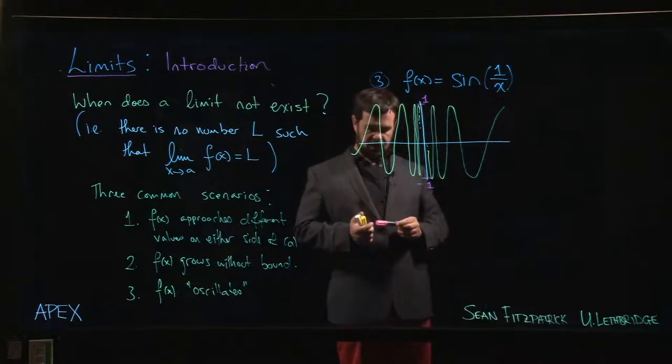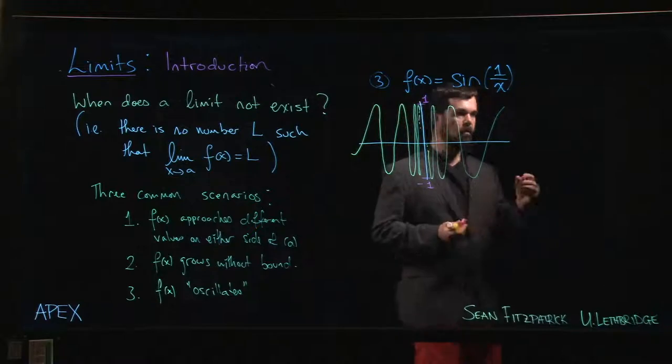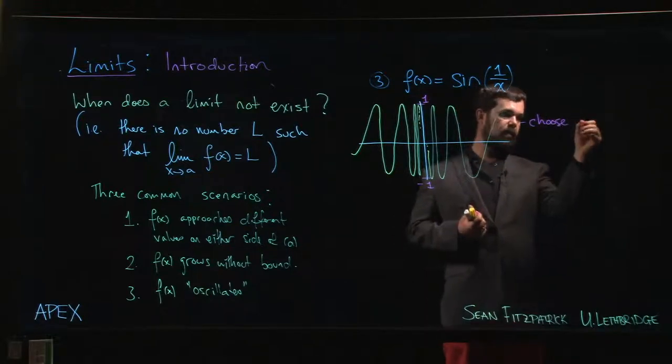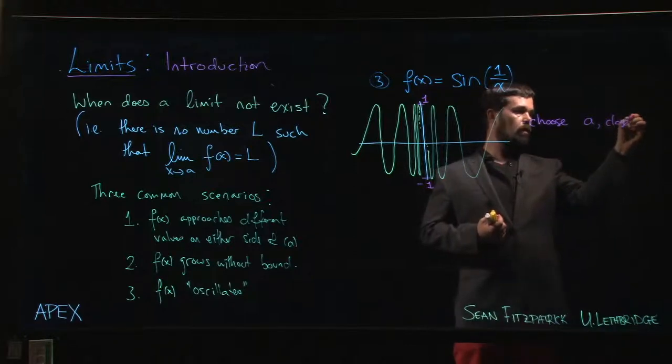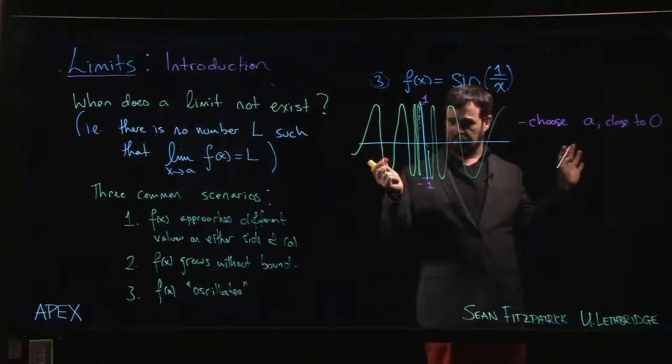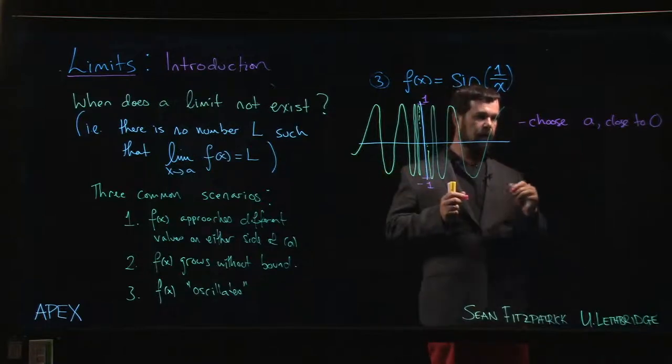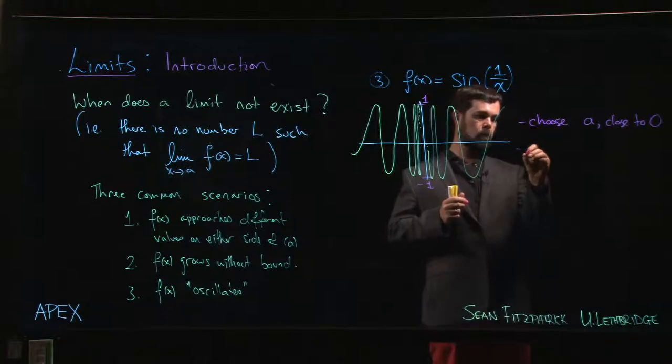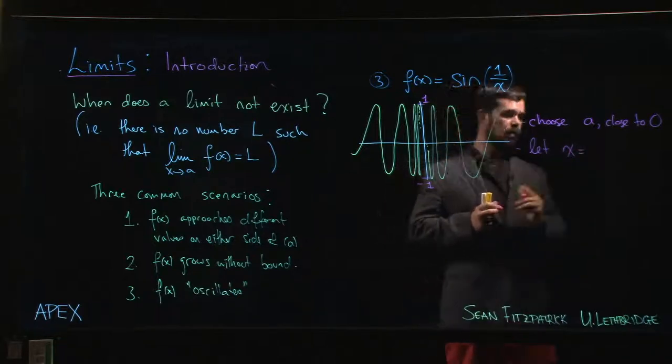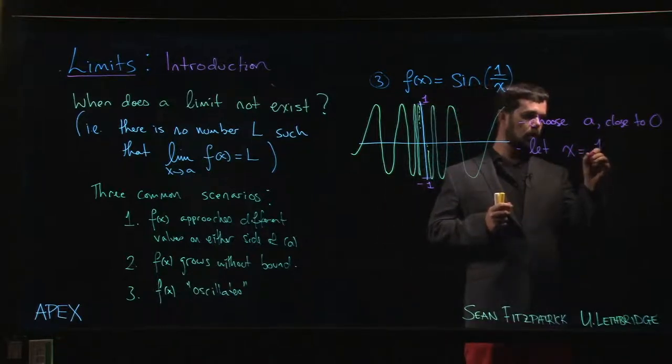And the reason is, let's say you choose some a which is close to zero. So a is some small number like 0.001. Well, what you can do is you could let x equal one over some multiple, let's say n of pi.